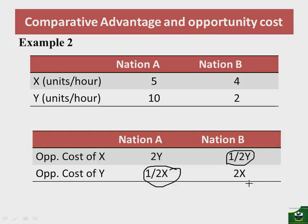Given what Haberler stated, nation A has a comparative advantage in the production of commodity Y, while nation B has a comparative advantage in the production of commodity X. For the two nations to gain, nation A must specialize in the production of commodity Y and nation B must specialize in the production of commodity X.